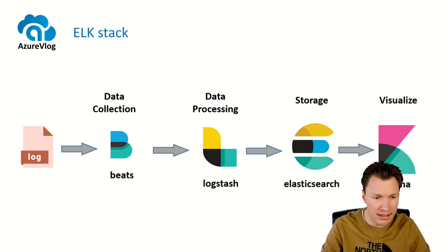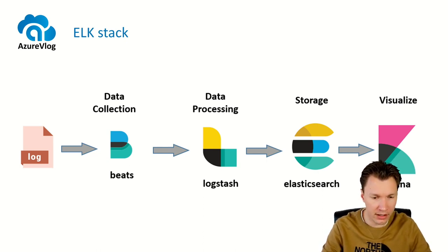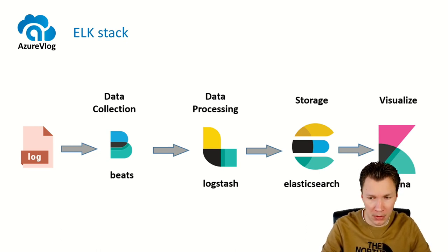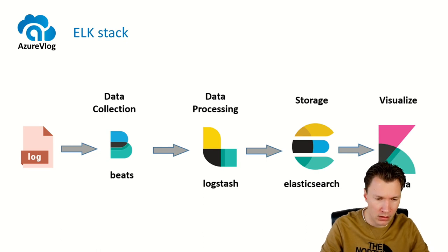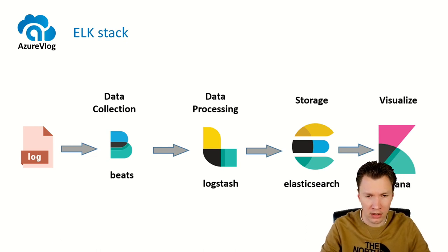Logstash is a data transformation tool. Elasticsearch is a search-optimized database. And Kibana is a tool that we can use to visualize data in that Elasticsearch database. We often now see Filebeats being used together with Logstash, Elasticsearch, and Kibana. Filebeats basically helps collecting data and pushes it over to Logstash for further processing.